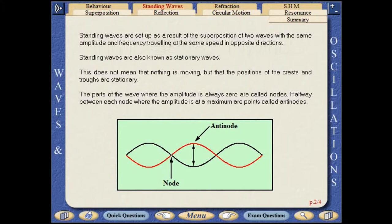The parts of the wave where the amplitude is always zero are called nodes. Halfway between each node, where the amplitude is at a maximum, are points called antinodes.